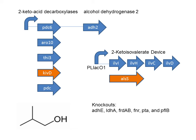Finally, they examine a series of gene knockouts in ADHE, IDHA, FRDAB, FNR, PTA, and PFLB. These genes normally divert flux from pyruvate to generate acetate or lactate, far upstream of the 2-keto isovalerate pathway. Through this process, they were able to identify combinations of added genes and removed genes that take them within 86% of the theoretical maximum efficiency.